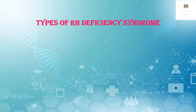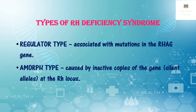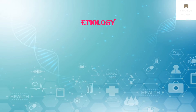Now let us see the types of RH deficiency syndrome. The regulator type is associated with mutations in the RHAG gene — RH associated glycoprotein. The mutations in this gene cause stomatocytosis. Another type is the amorph type, which is caused by inactive copies of the gene, or silent alleles, which are located at the RH locus itself.